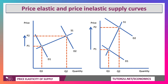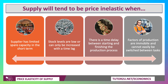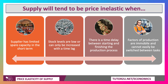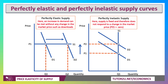Here's a price inelastic supply curve. A big increase in demand from D1 to D2 results in only a limited supply response and price goes up from P1 to P2. Supply tends to be price inelastic when there is limited spare capacity, when stock levels are low or can only be increased with a time lag, when there's a lengthy delay between starting and finishing a production process, and when factors of production — land, labour, and capital — are immobile and cannot easily be switched between tasks. There is also a perfectly elastic supply curve and a perfectly inelastic supply curve, where quantity is fixed and supply does not respond to a change in market price.